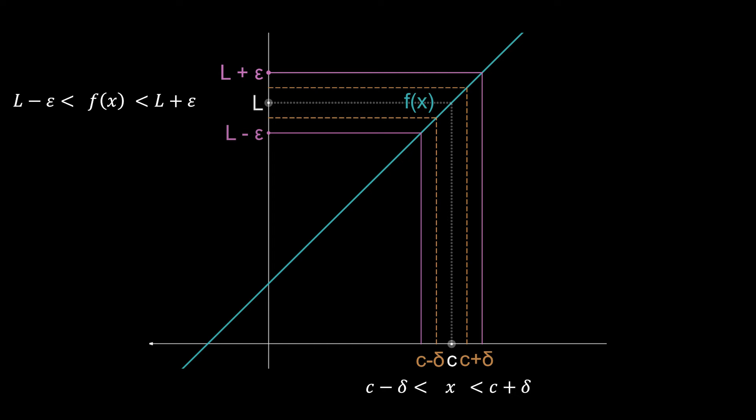In summary, for any arbitrary value of ε, there are multiple possible values for δ that satisfy the conditions.